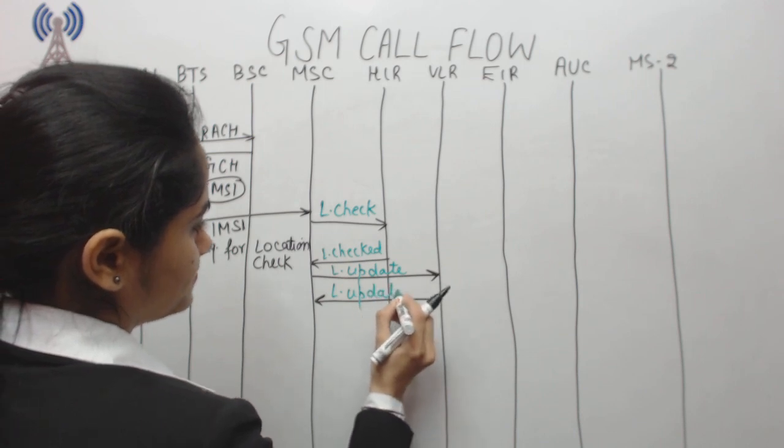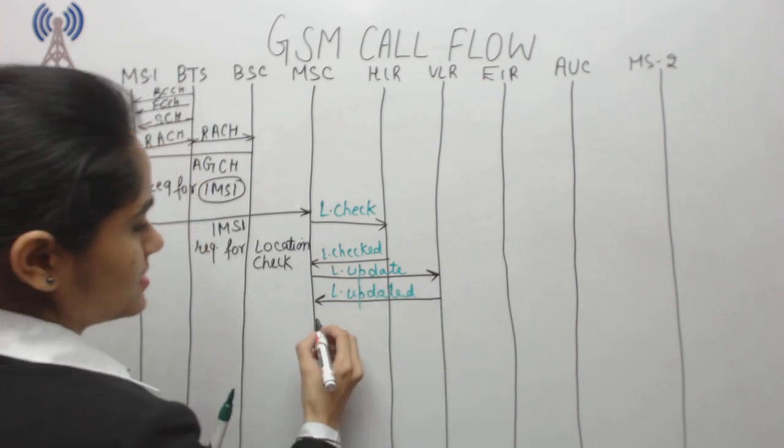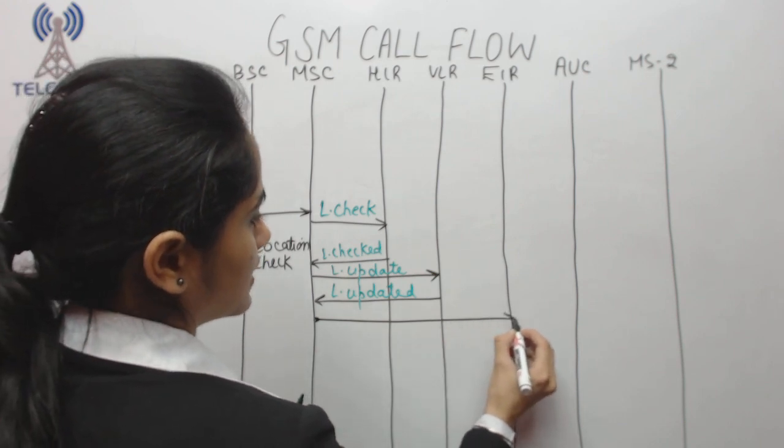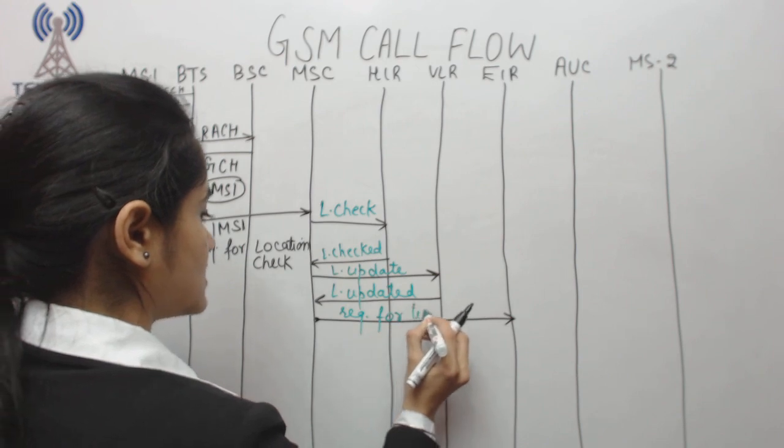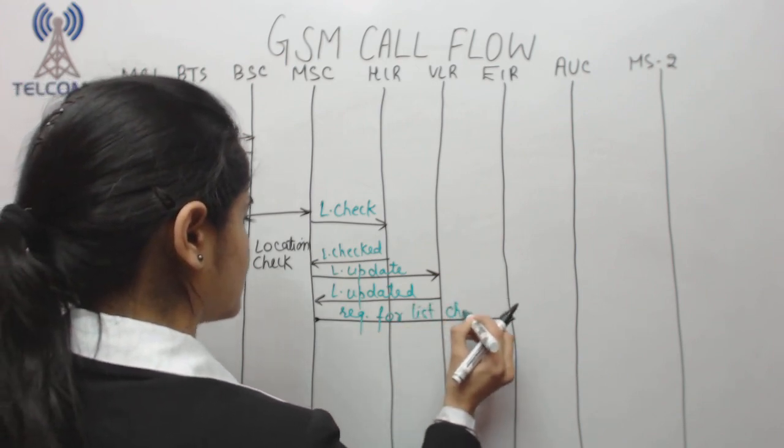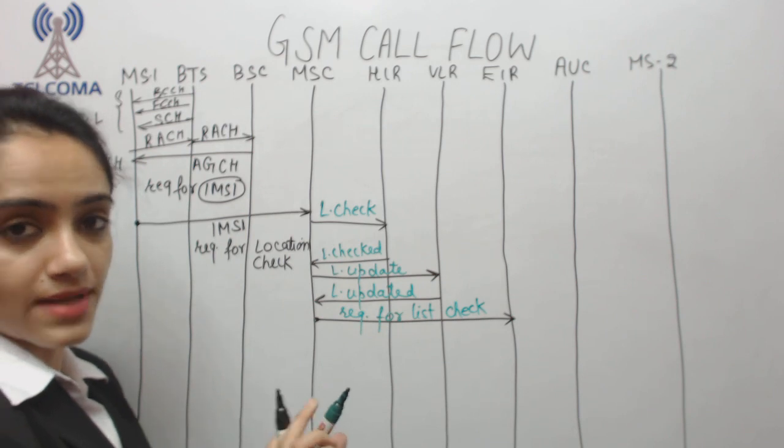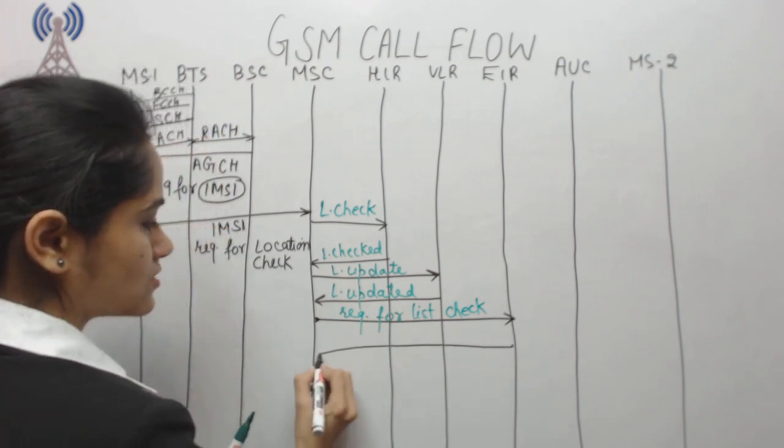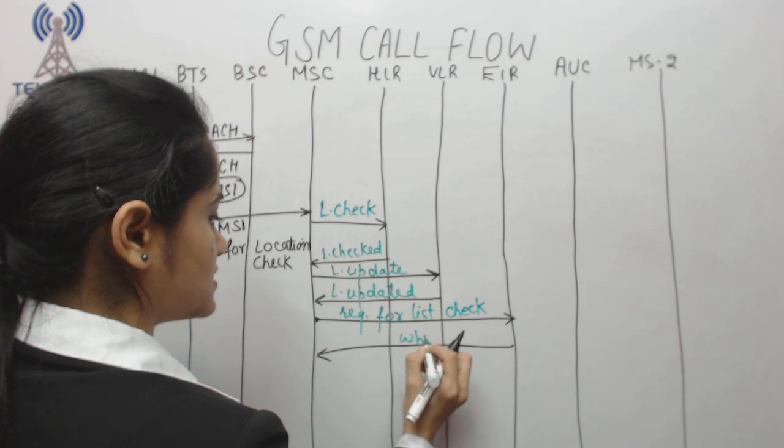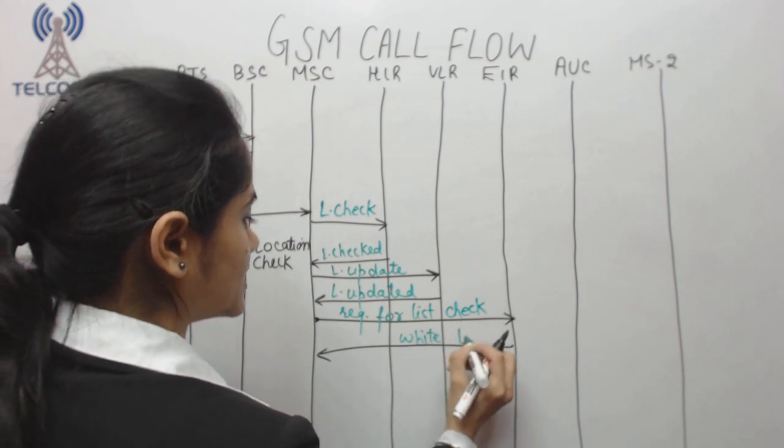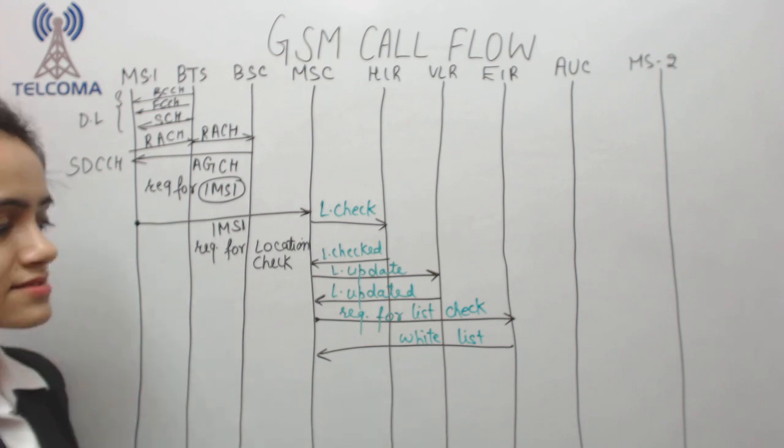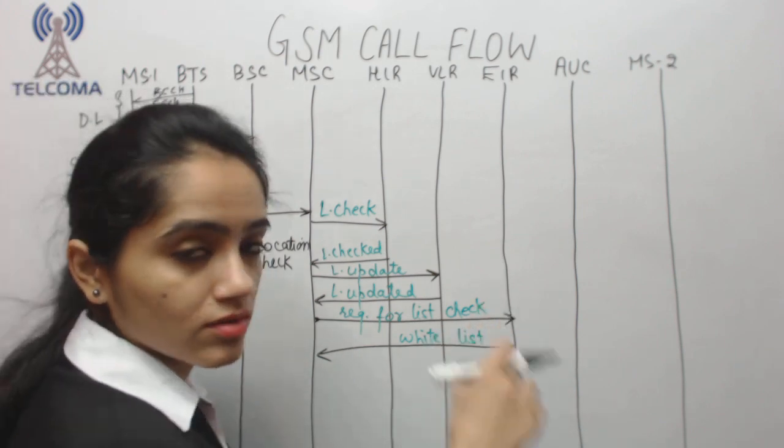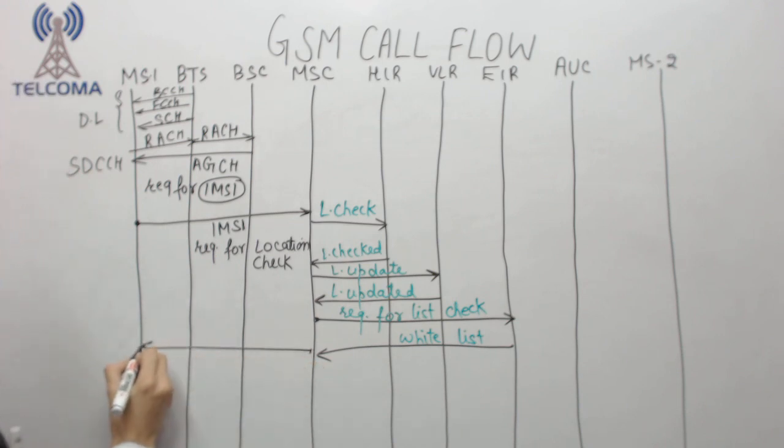After that, MSC will send a message to EIR with a request for list check because it has to check whitelist, graylist, and blacklist, and accordingly process the call. After list check, if the user is in whitelist, the call proceeds. If blacklist, the call will be interrupted.